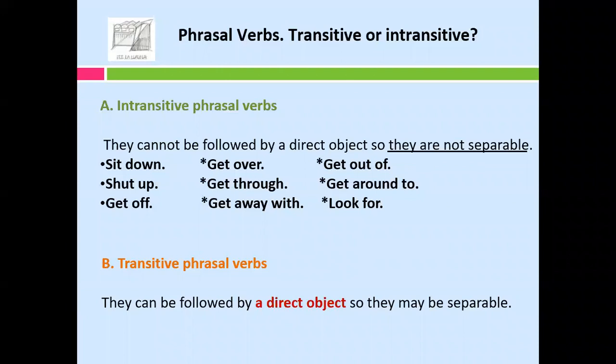Intransitive phrasal verbs cannot be followed by a direct object, so they are non-separable. For example: sit down, shoot up, get off, get over, get through, get away with, get out of, get around to, and look for. These phrasal verbs, and many more, are non-separable — it means they always stay together.